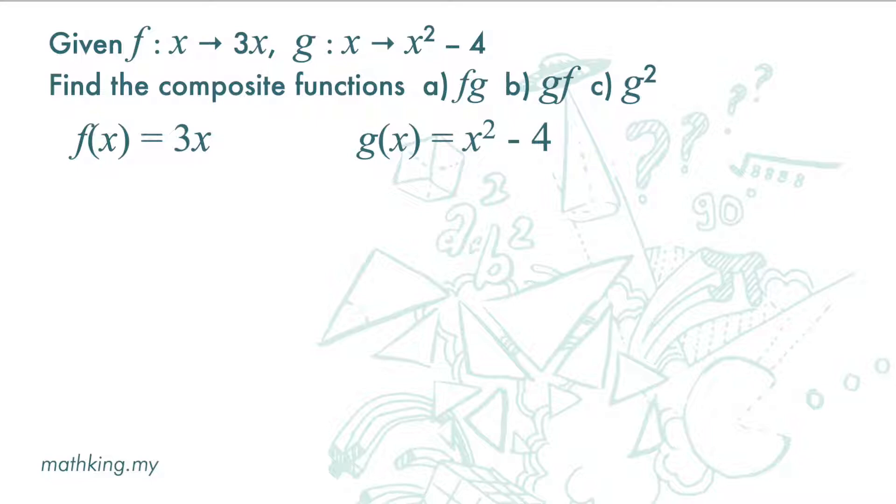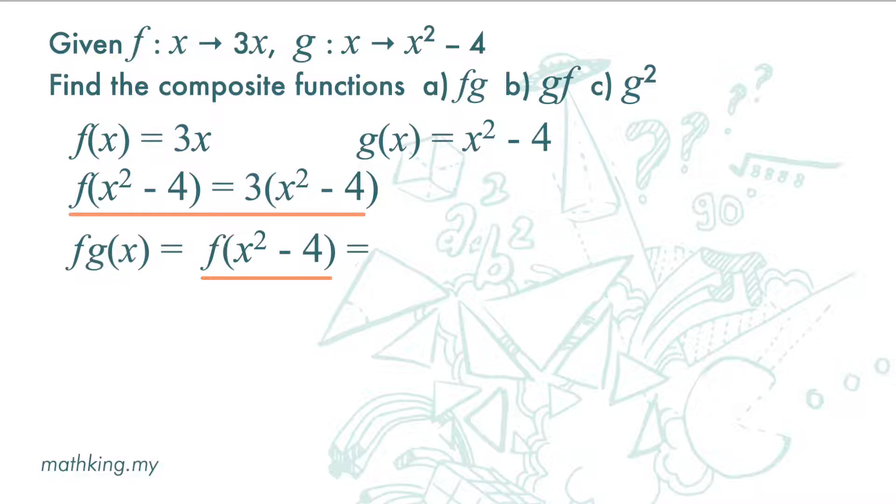For part a, we want to find composite function fg. So we write fg(x) here. Now g(x) is x squared minus 4. Next, function f equals 3x, but now the object is x squared minus 4 and not x. So we have 3 times (x squared minus 4).